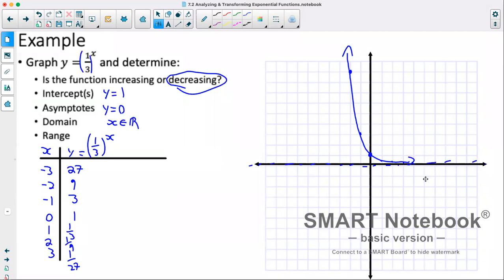Range, our graph will never be a negative value. So therefore, y is greater than 0 because it also can't equal 0.